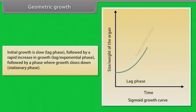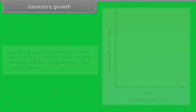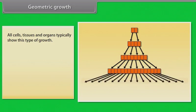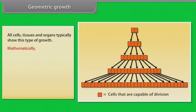Geometric growth. Initial growth is slow, followed by a rapid increase in growth, followed by a phase where growth slows down. All cells, tissues and organs typically show this type of growth. Mathematically,